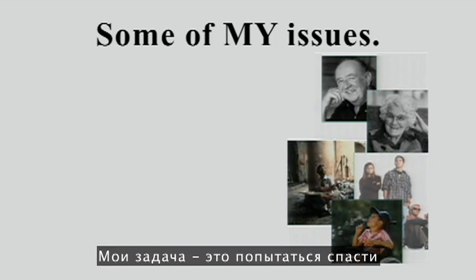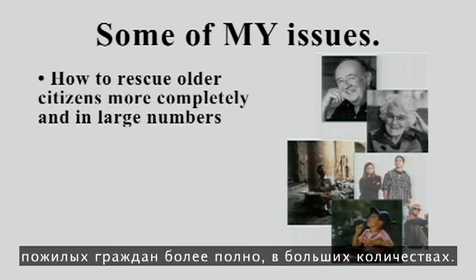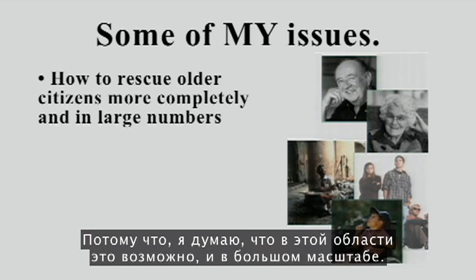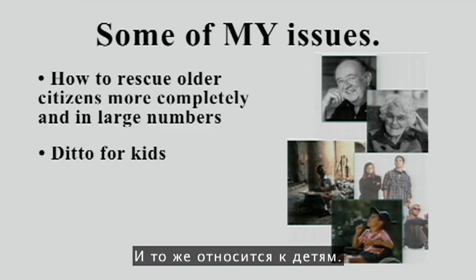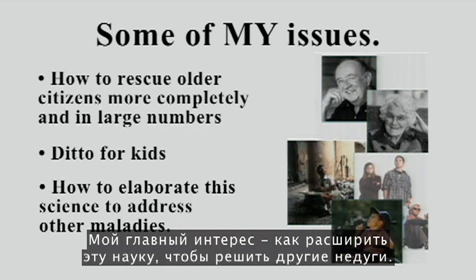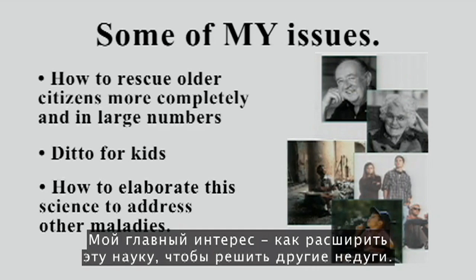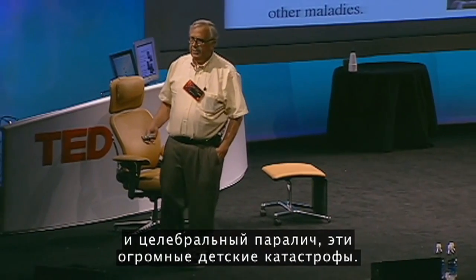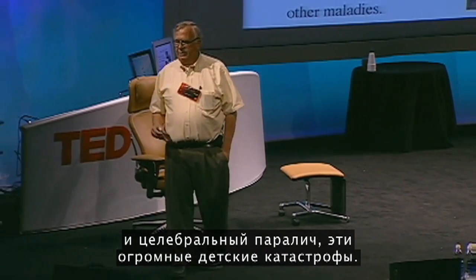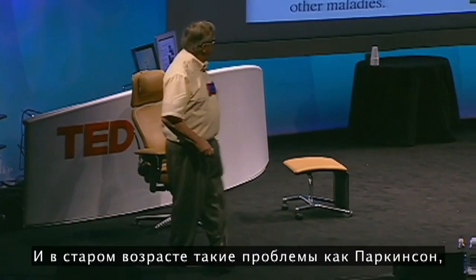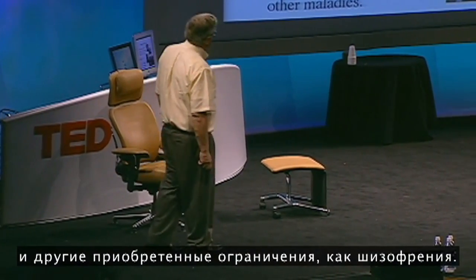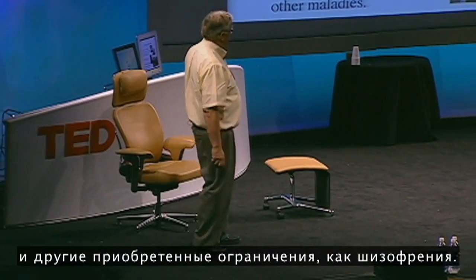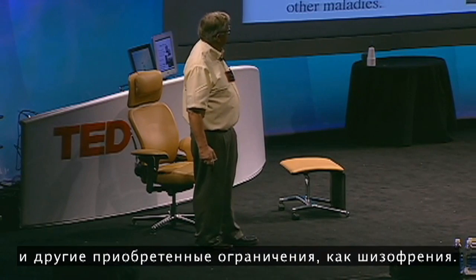My goal is to rescue older citizens more completely and in larger numbers, because I think this can be done on a vast scale — and the same for kids. My main interest is how to elaborate this science to address other maladies — specifically things like autism and cerebral palsy, these great childhood catastrophes, and in older age conditions like Parkinsonism and other acquired impairments like schizophrenia.